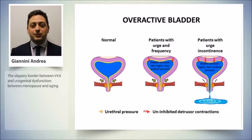If we analyze what happens to the bladder during menopausal transition, we must underline that the trigone, the epithelium, and the periurethral tissue express estrogen and progesterone receptors and are very sensitive to loss of estrogen. So after menopause there is an increase in uninhibited detrusor contractions, often leading to urge and frequency symptoms, and when urethral pressure is low, patients may experience urge incontinence.